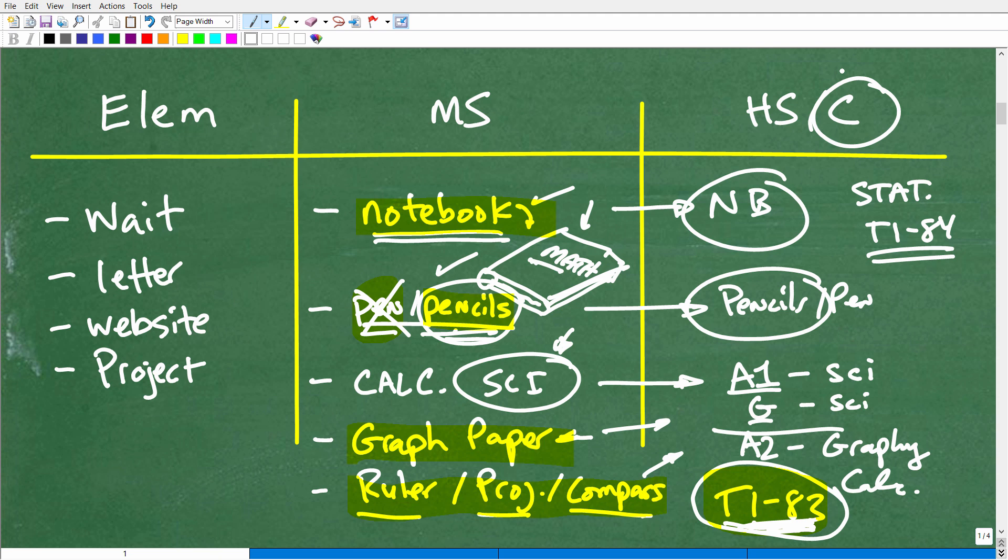Let's go ahead and call this video a wrap. So, again, elementary school, be looking for those letters. Check websites. Wait for that specific list that comes out. Middle school, find yourself an excellent notebook and pencils and a nice scientific calculator. And then get these things, graph paper and the rulers, protractor, compass. Have that. When you buy this, keep this, because you're going to need it in high school as well. The only thing in high school, again, that's going to come up is getting a graphing calculator, which you will need for sure in an algebra two or pre-calculus course.